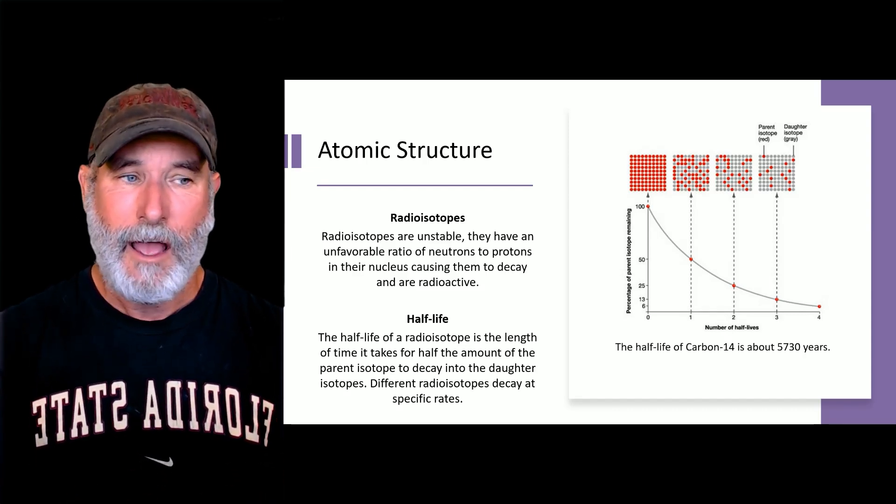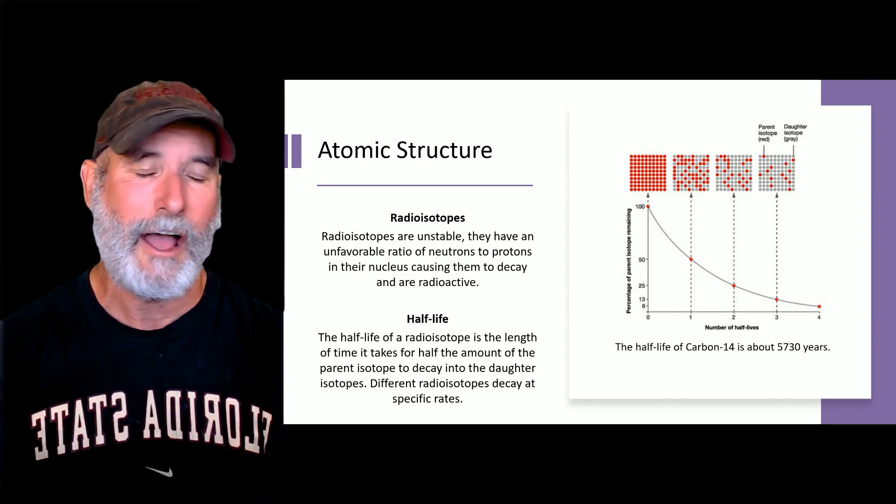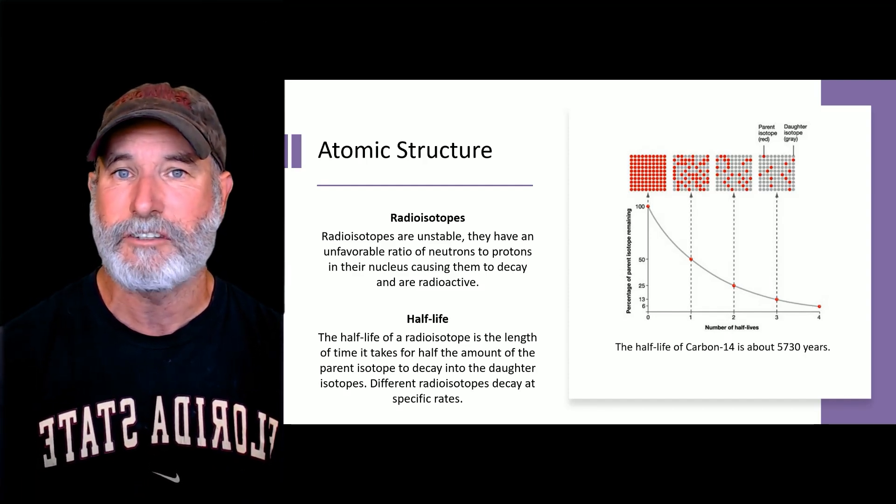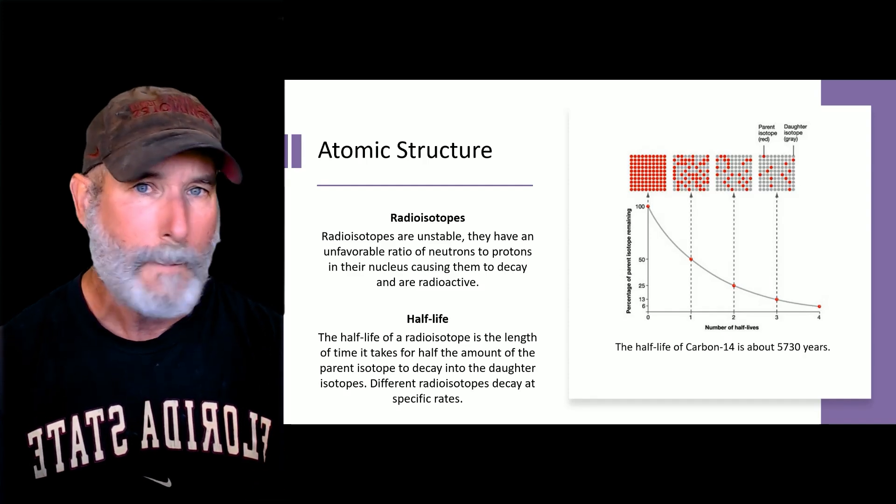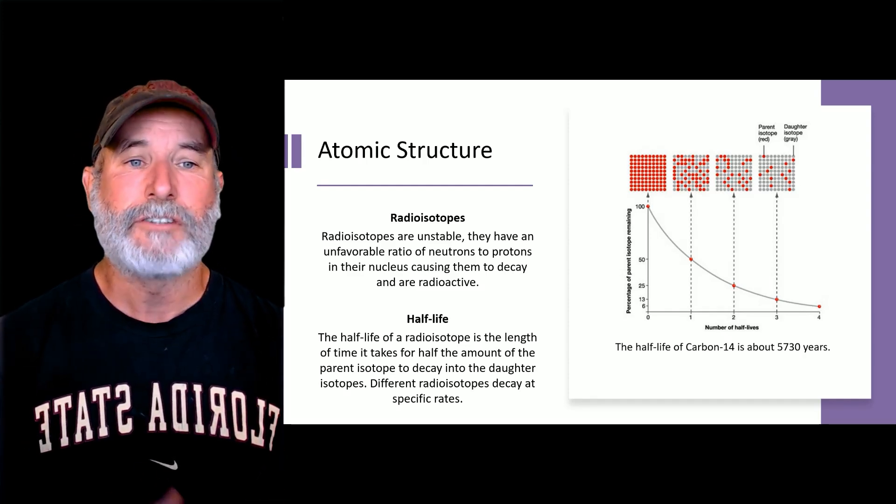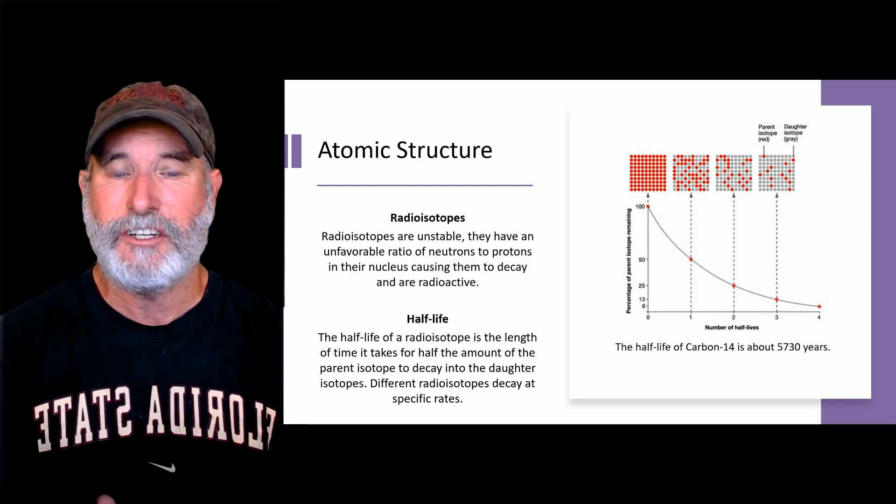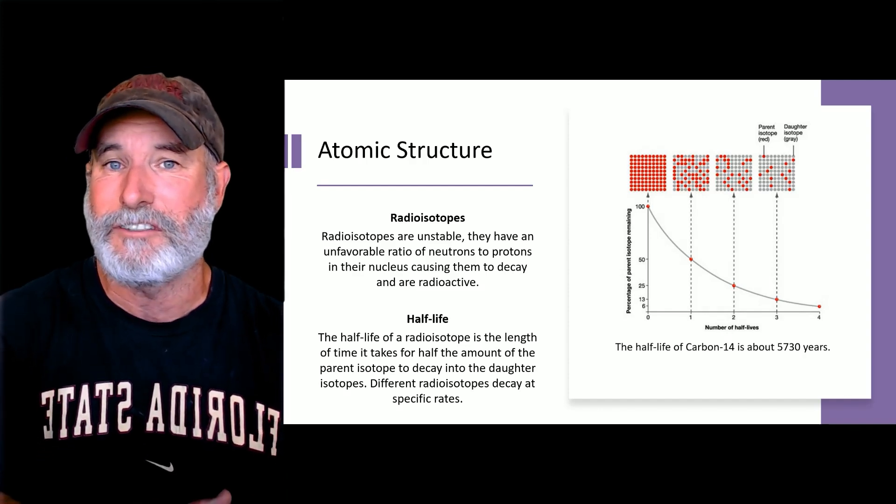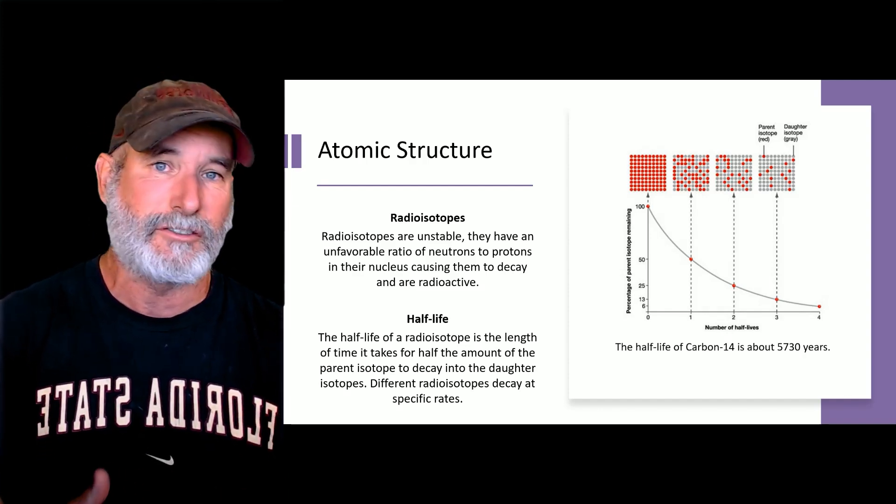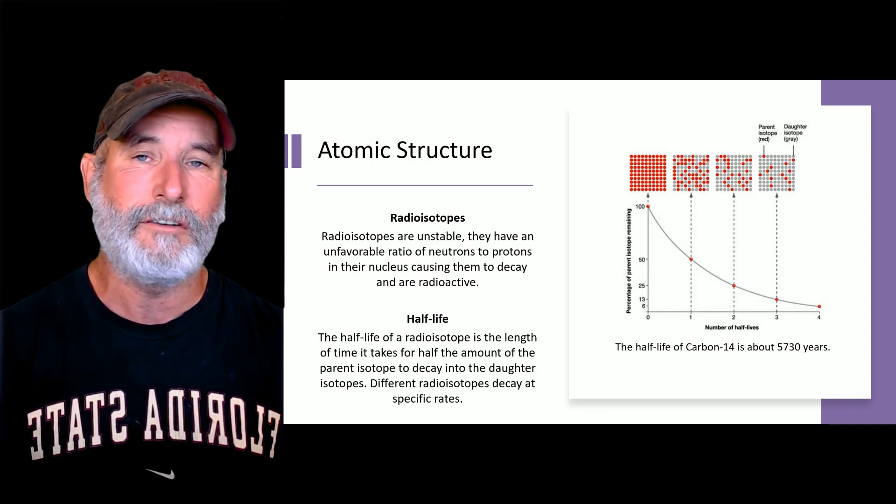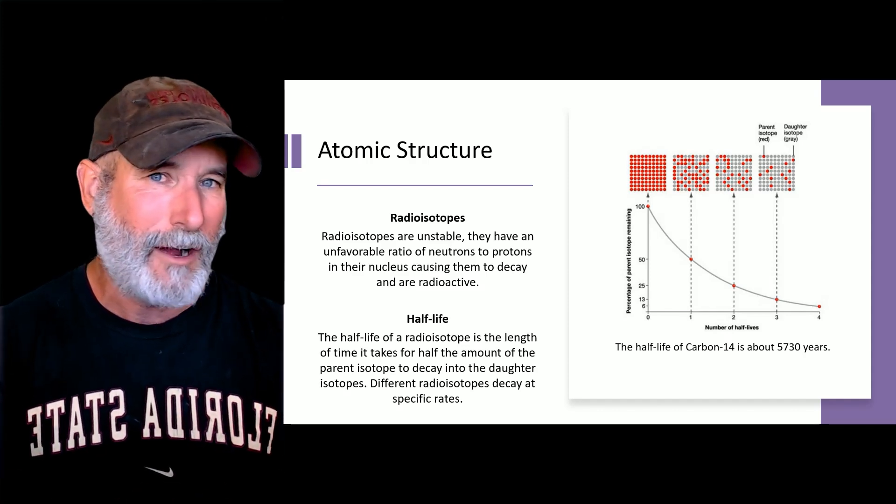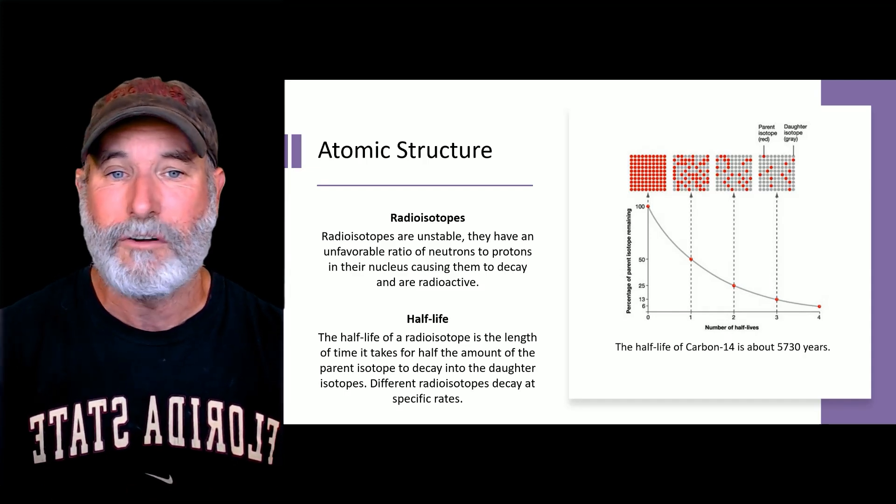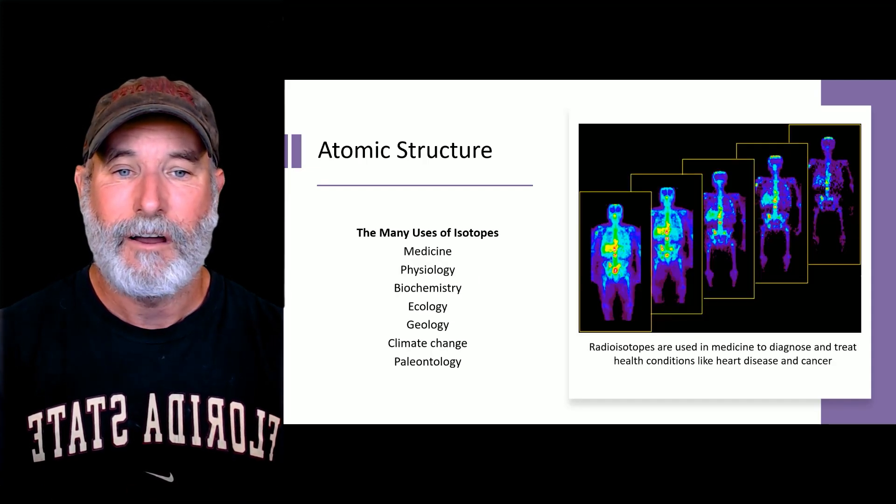Now, other isotopes have much longer half-lives. Some variations of uranium could be over 4 billion years. So, believe it or not, we don't actually use carbon-14 to date old rocks. We only use it to date things that have died in the last 50 or so thousand years. But we use lots of other radioisotopes to date rocks going back to the age of the Earth, the origin of the Earth, 4.6 billion years ago.